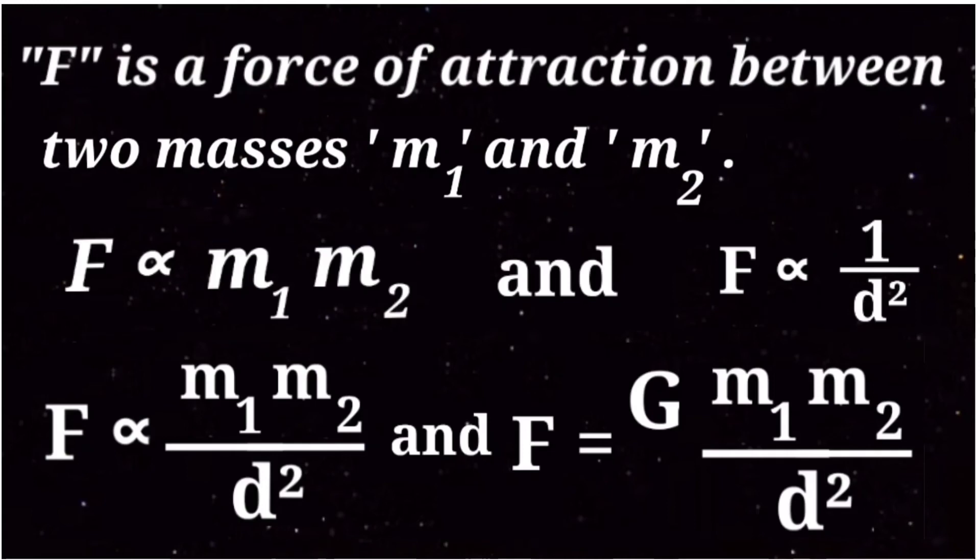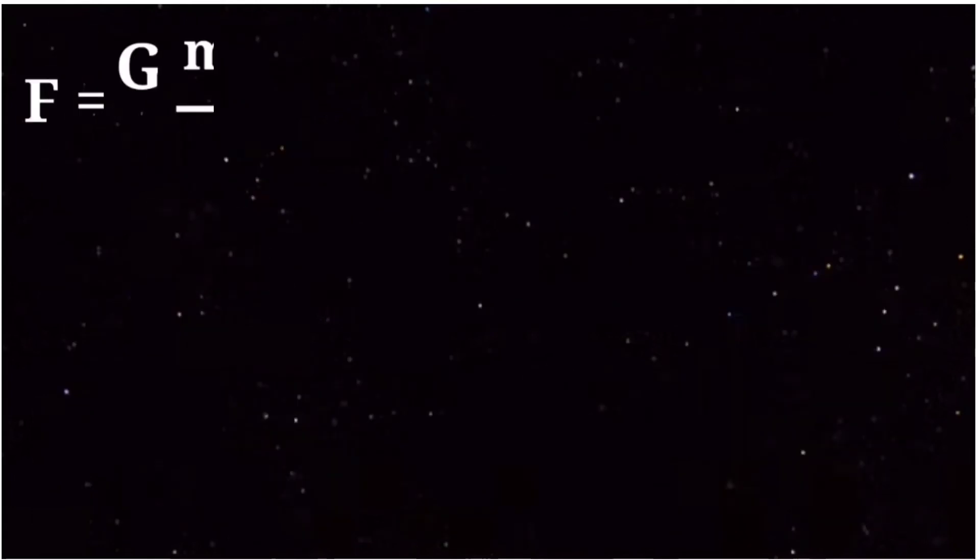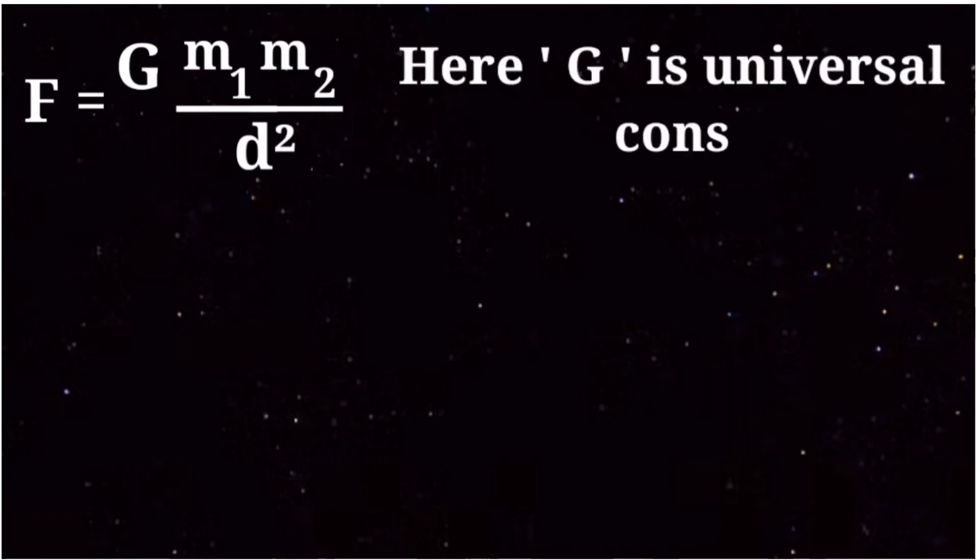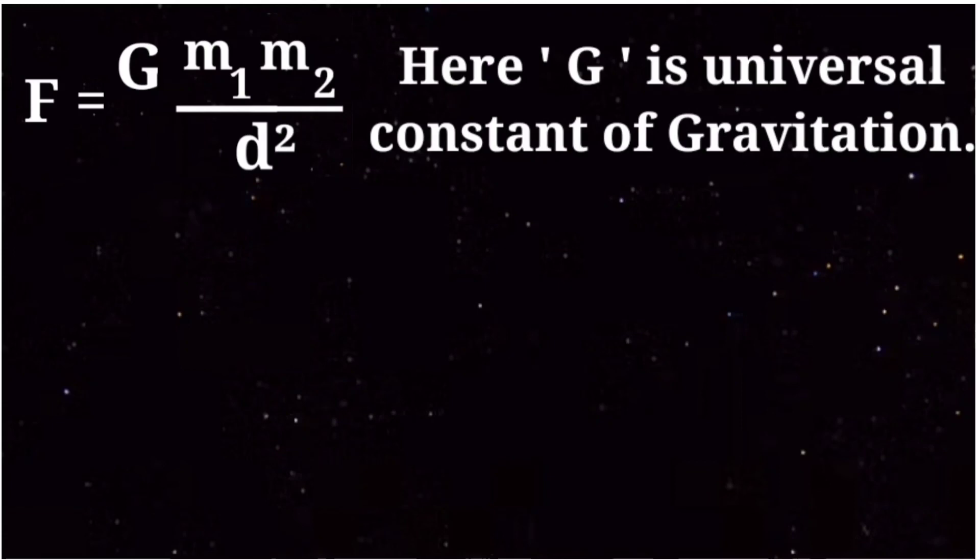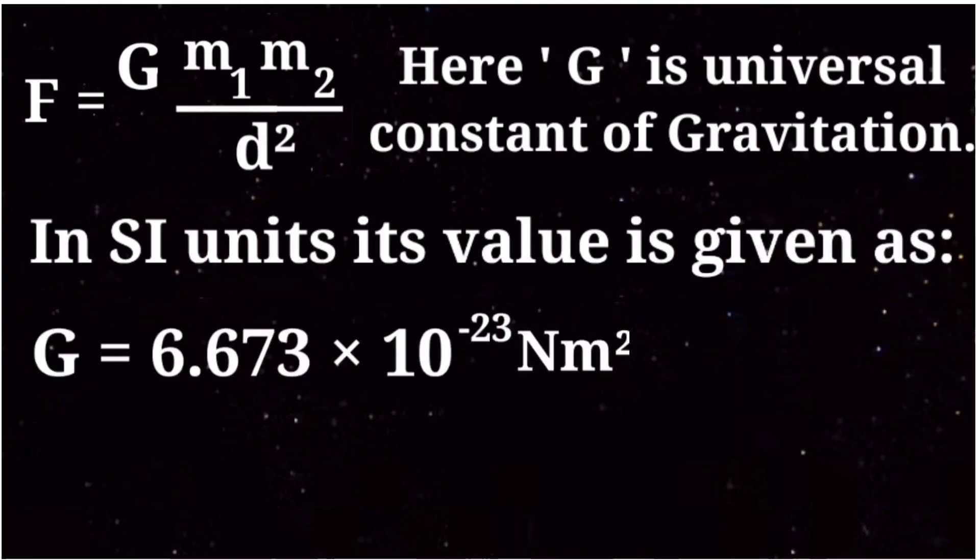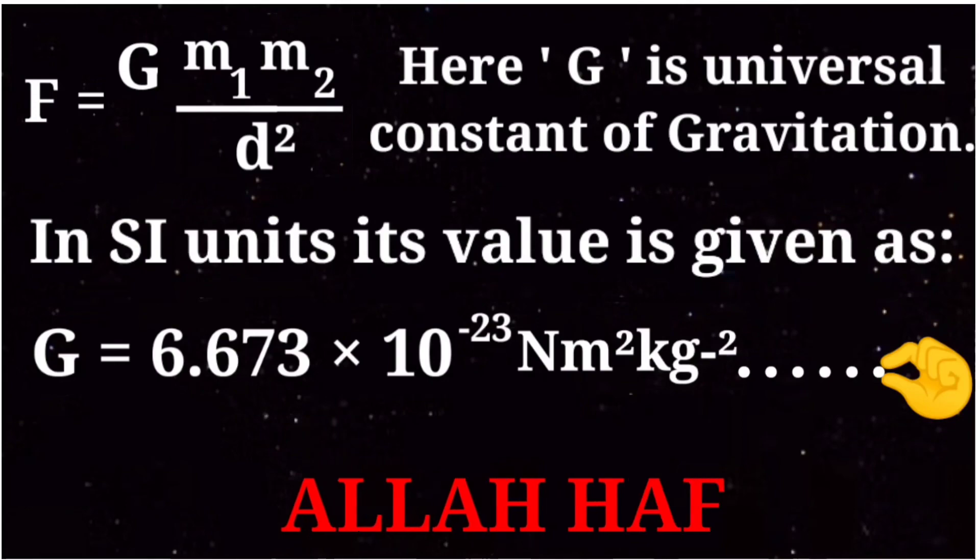From here we tell about G. Here G is the universal constant of gravitation. In SI units its value is given as G equals 6.673 times 10 to the power of minus 23 Nm squared per kilogram squared.